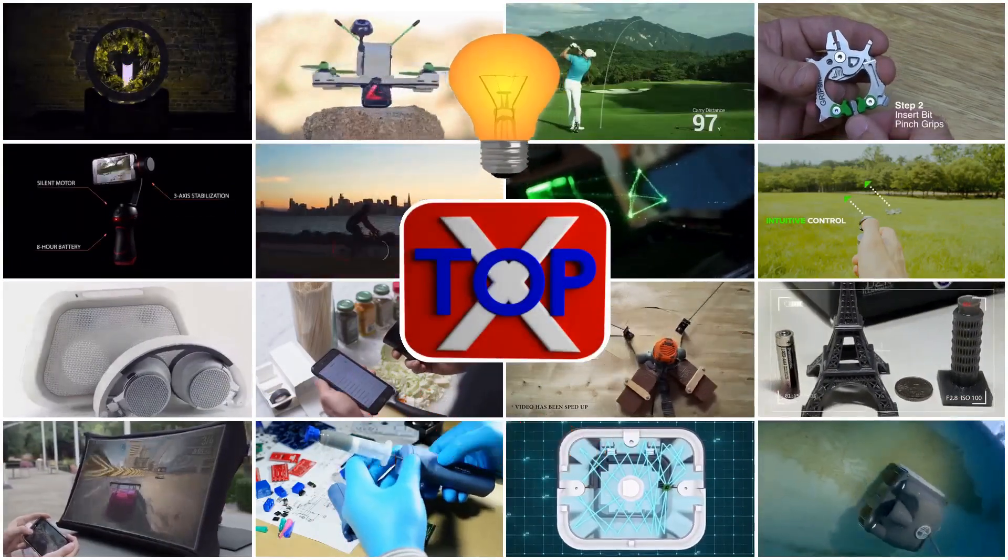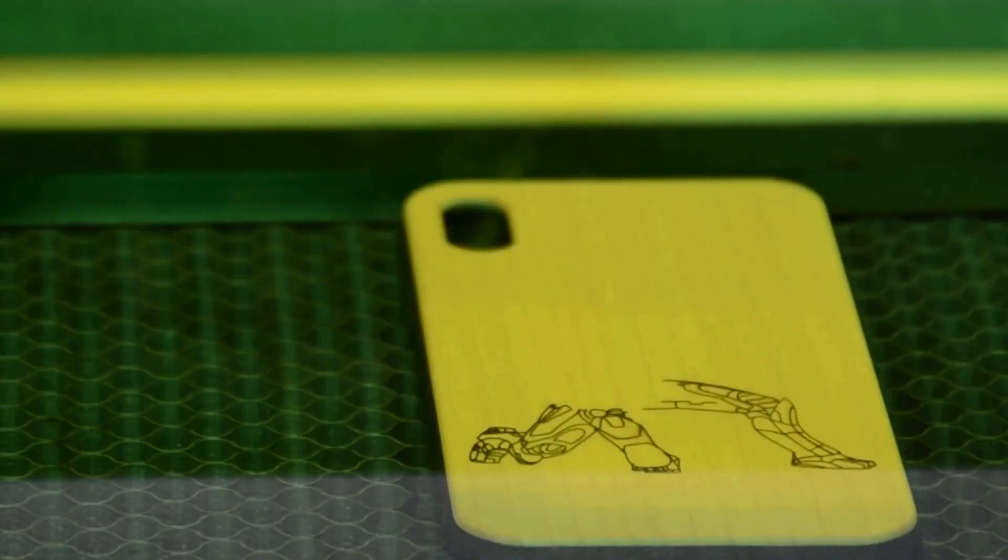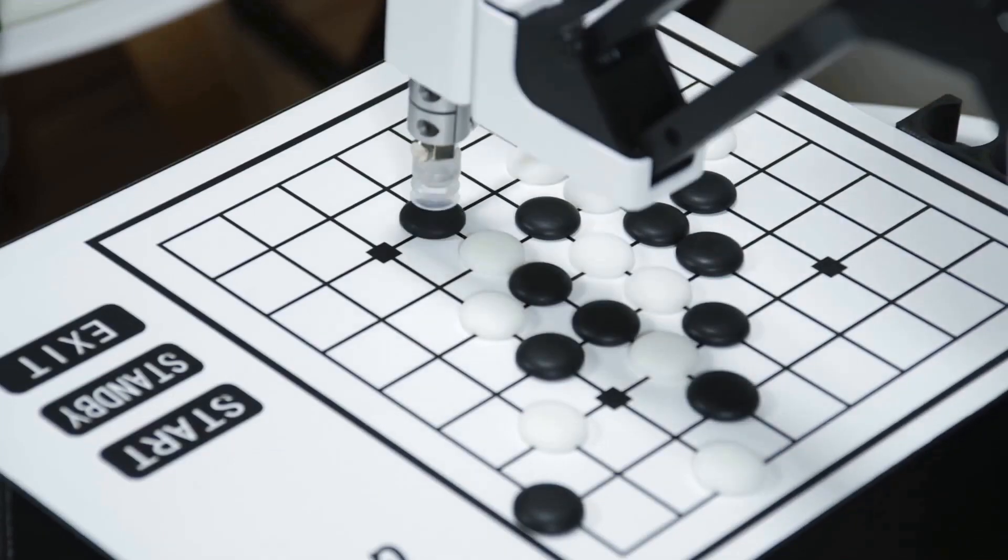New Inventions. Imagine having Iron Man's Jarvis on your desktop that writes your letters, draws your pictures, laser engraves your phone case, and plays chess with you.